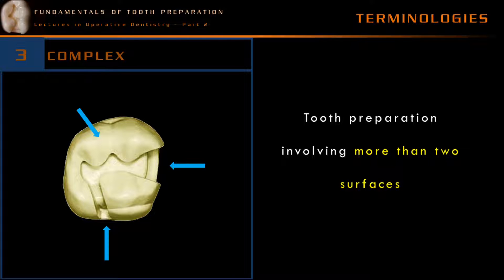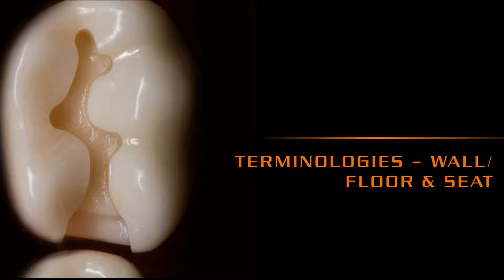In the diagrammatic representation given here, the tooth preparation involves the mesial surface, the occlusal surface, and also the palatal surface. In this part of the presentation, I will be teaching you all about the wall, floor, and seat in tooth preparation.